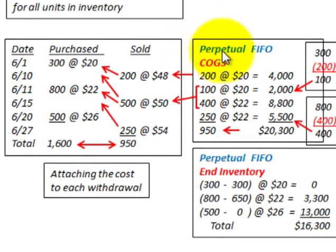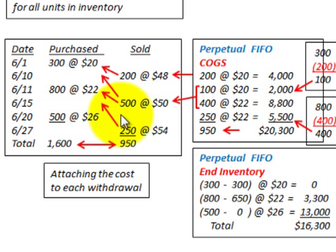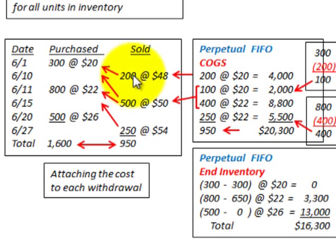Now let's look at the perpetual FIFO method, where we attach the cost of each withdrawal to the inventory at the time of each sale. In this case we have to account for each individual sale — 200, 500, and 250 units — for a total of 950 units sold, tracking cost based on each withdrawal as it's made.